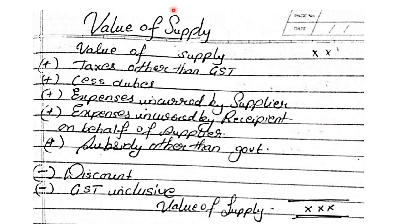To calculate the value of supply, the very first thing to note is the value of supply of goods or services — that is your original value of your product. To that, we need to add all taxes other than GST, add all cesses and duties, add all expenses incurred by the supplier, add all expenses incurred by the recipient on behalf of the supplier, and add all subsidies other than government subsidy. Government subsidy is exempted. When you add all this, you get the gross value of supply.